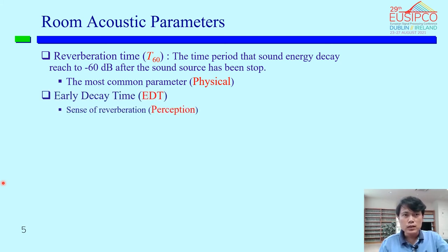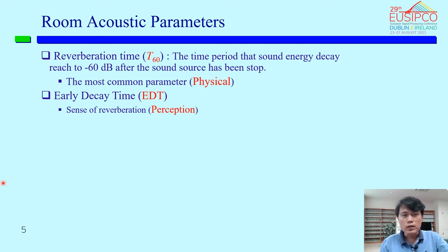From the measured room impulse response, we can derive room acoustic parameters. The first is reverberation time T60, derived from the energy decay from 0 dB to -60 dB. The second is Early Decay Time, or EDT, which is similar to reverberation time but found to be more closely related to our perception of reverberation.